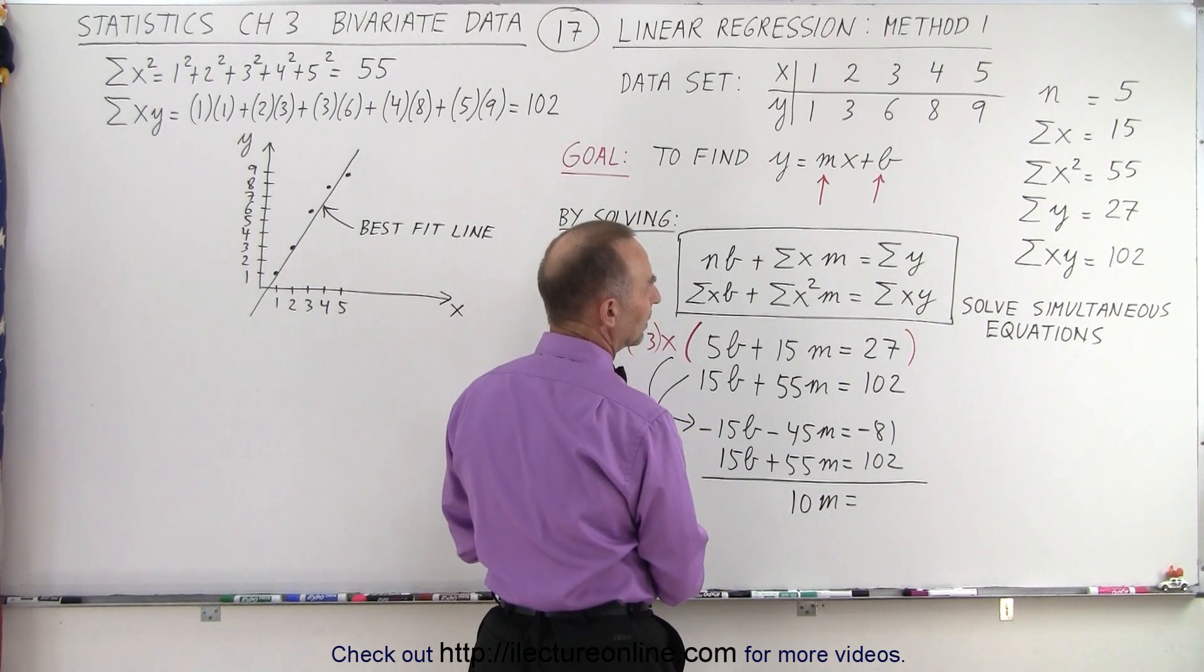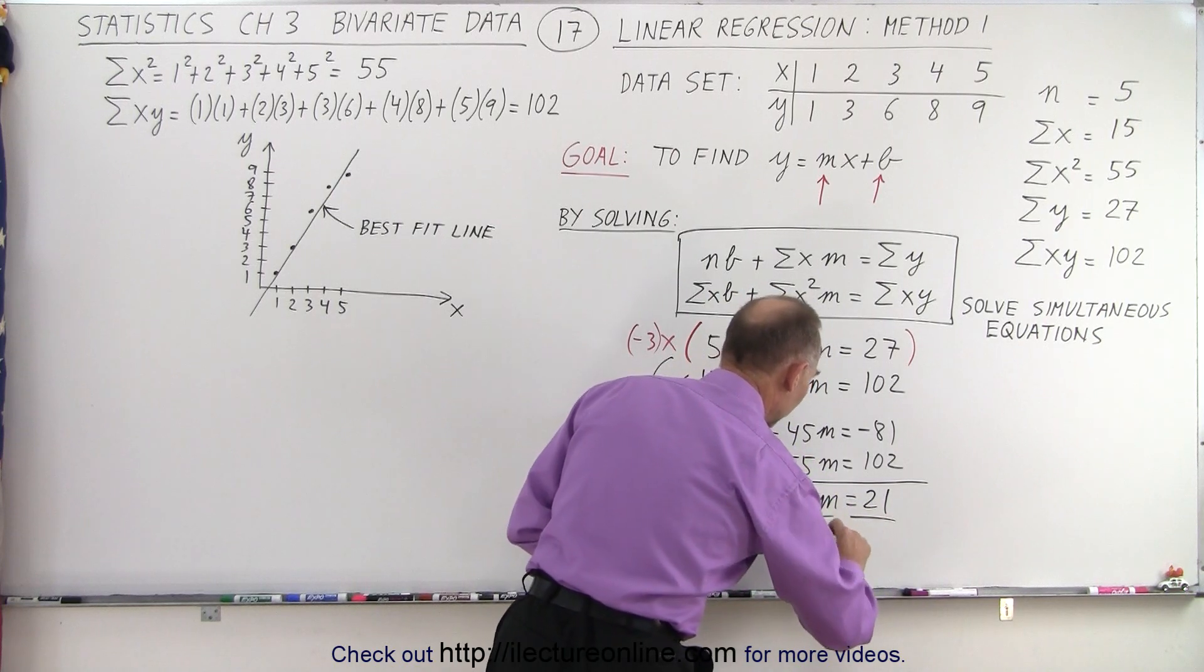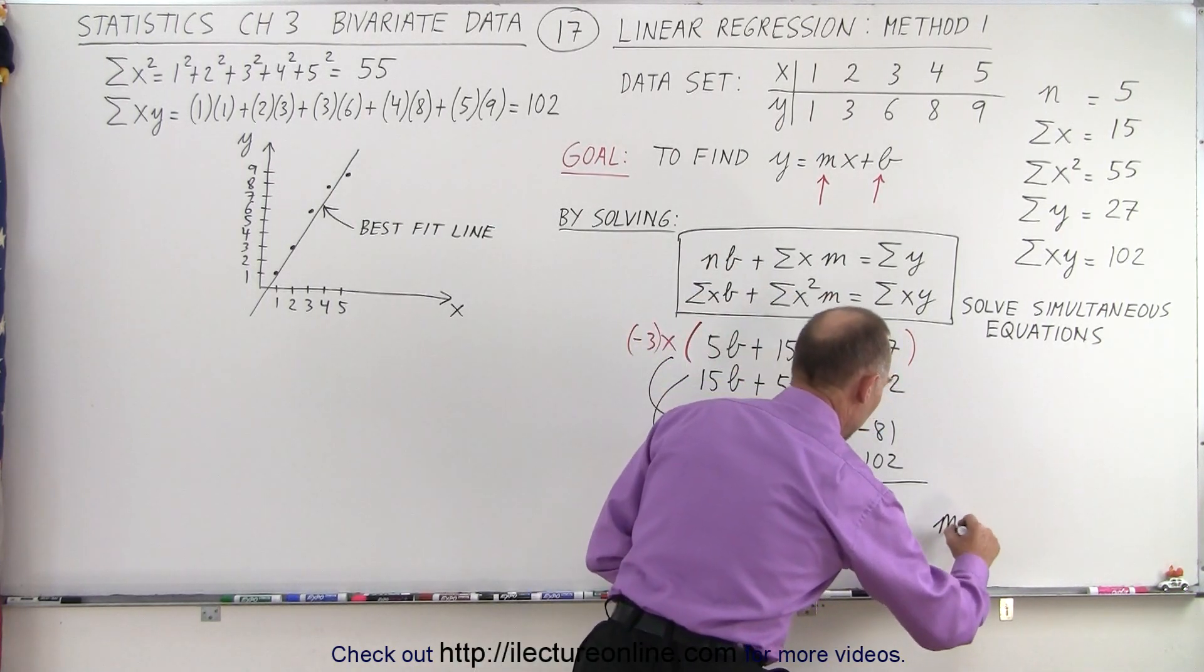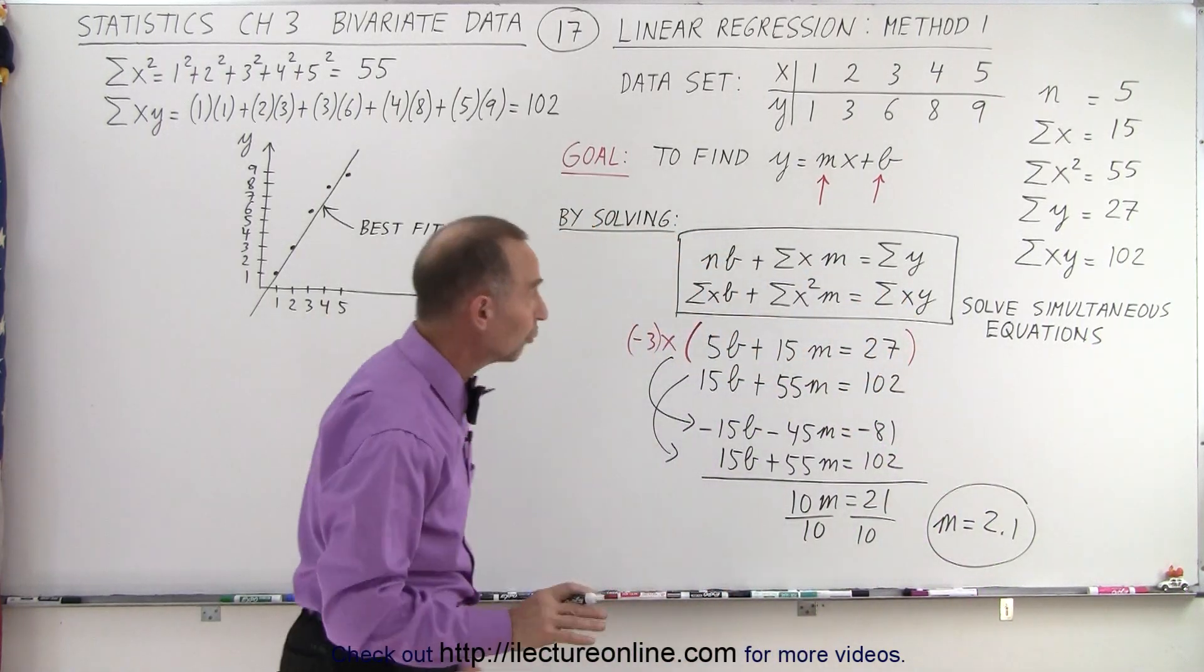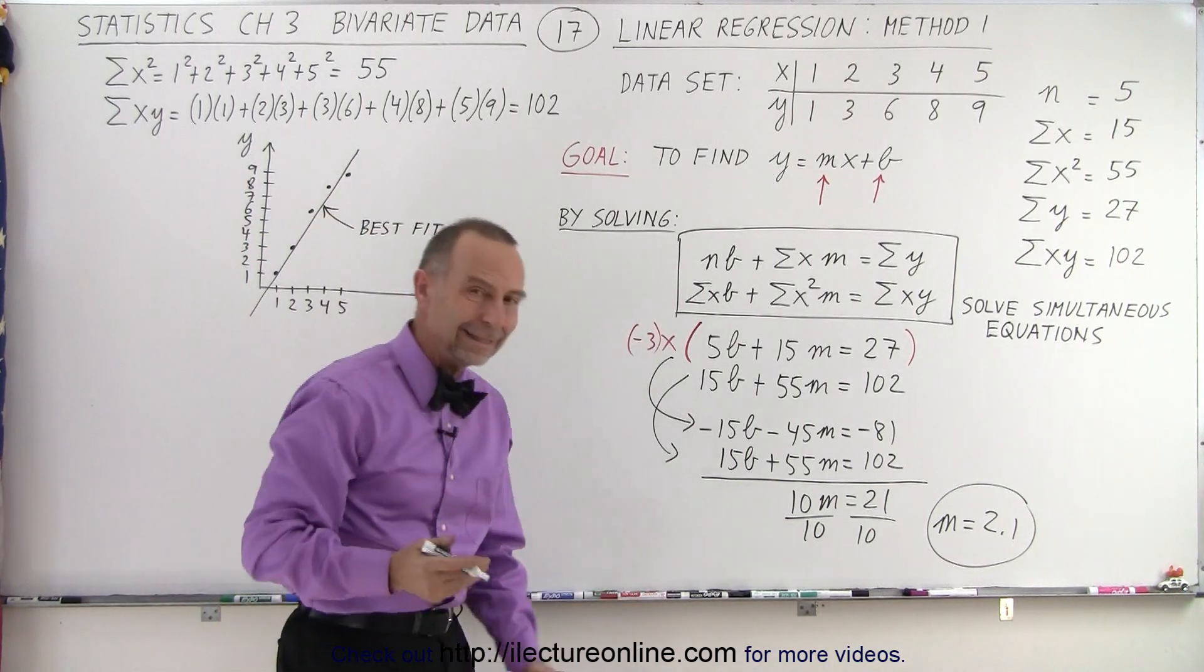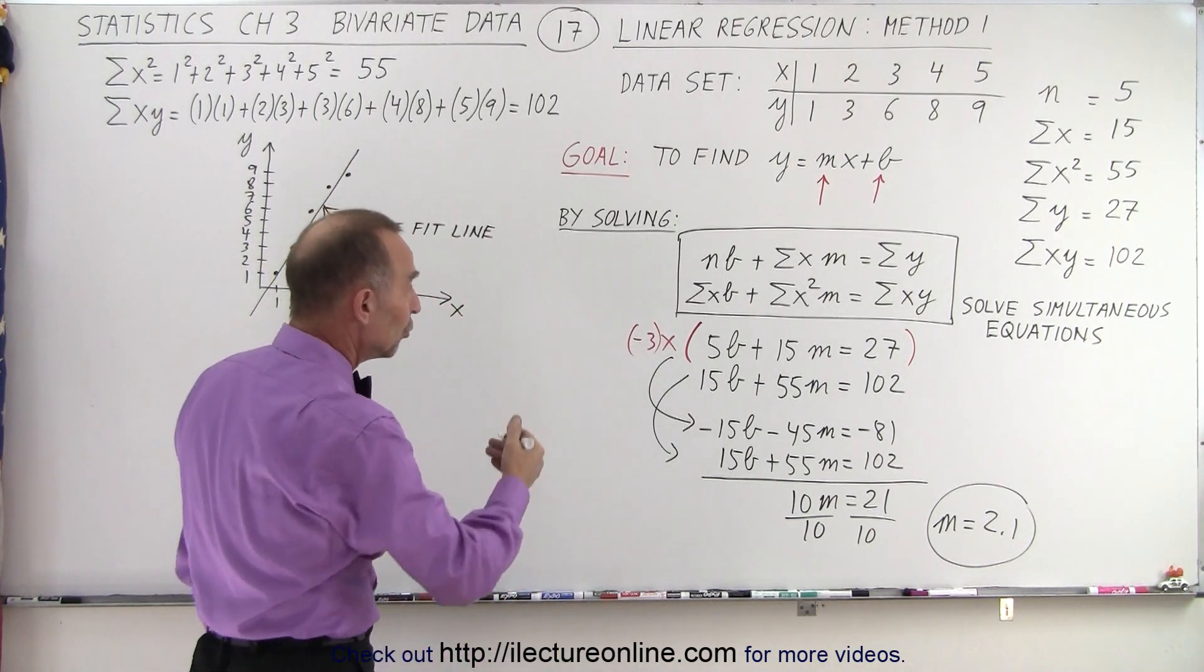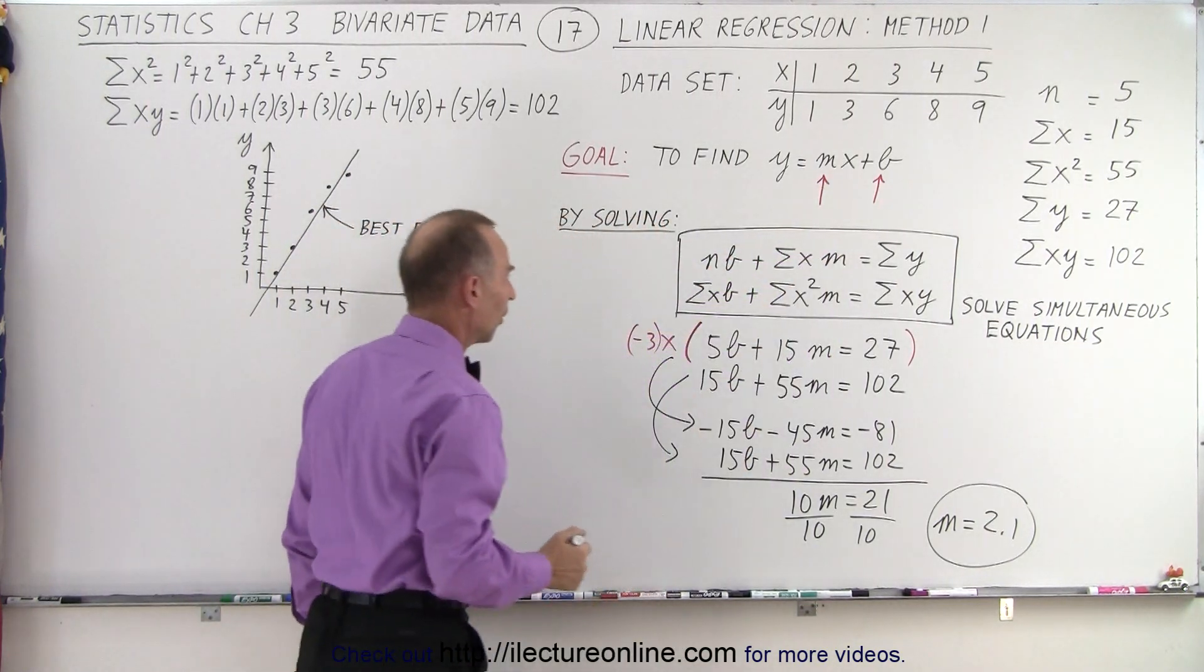That would be, let's see, that's 19, that's 21. Divide both sides by the numerical coefficient of m, and we get that m is equal to 2.1. So that allows us to find one of our two constants that we're looking for. In the case that we're solving the two equations, we think of m as a variable, but essentially it's a constant in the equation we're looking for.